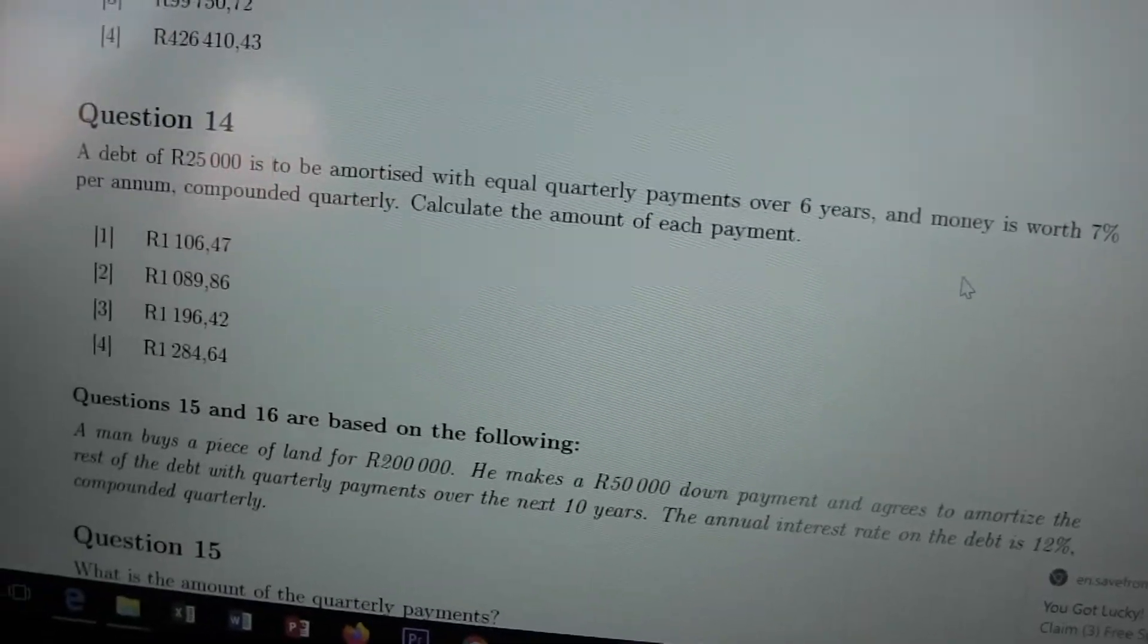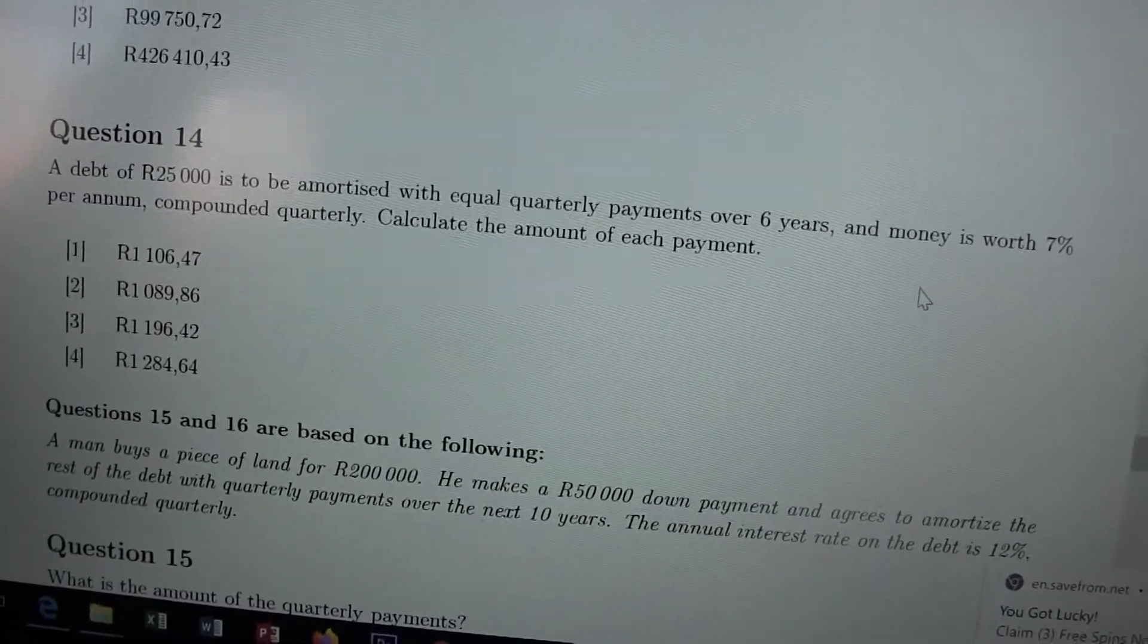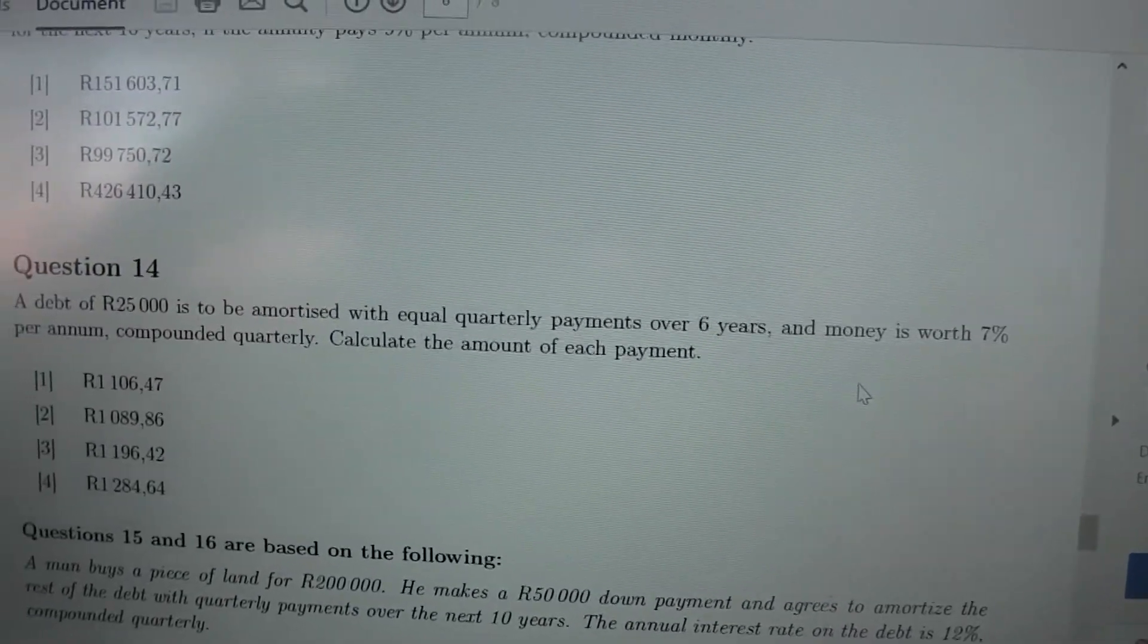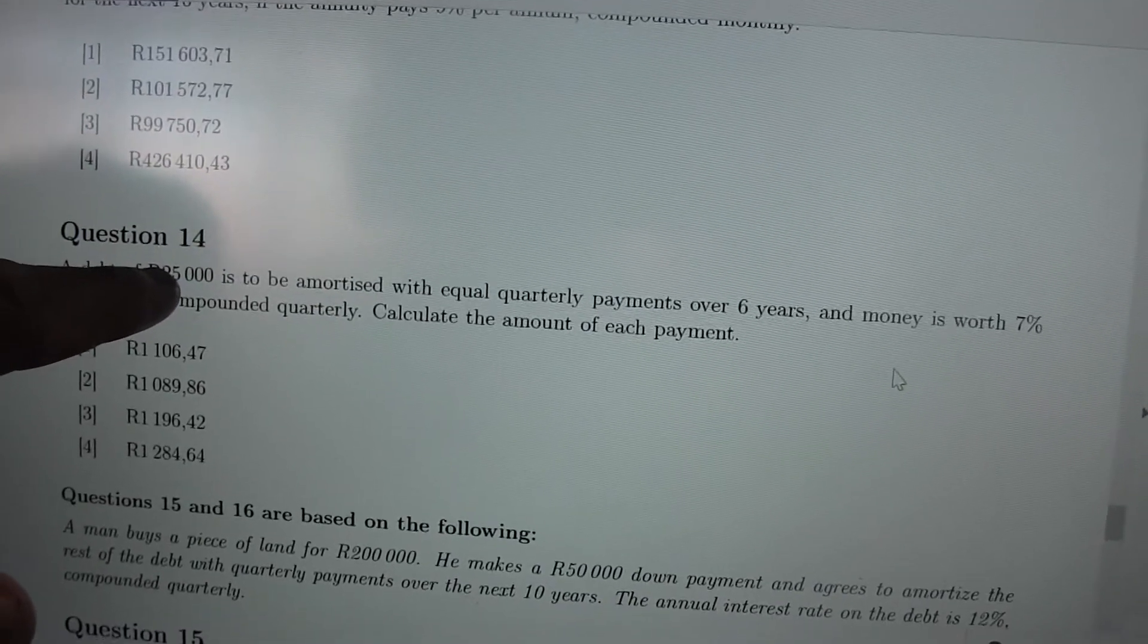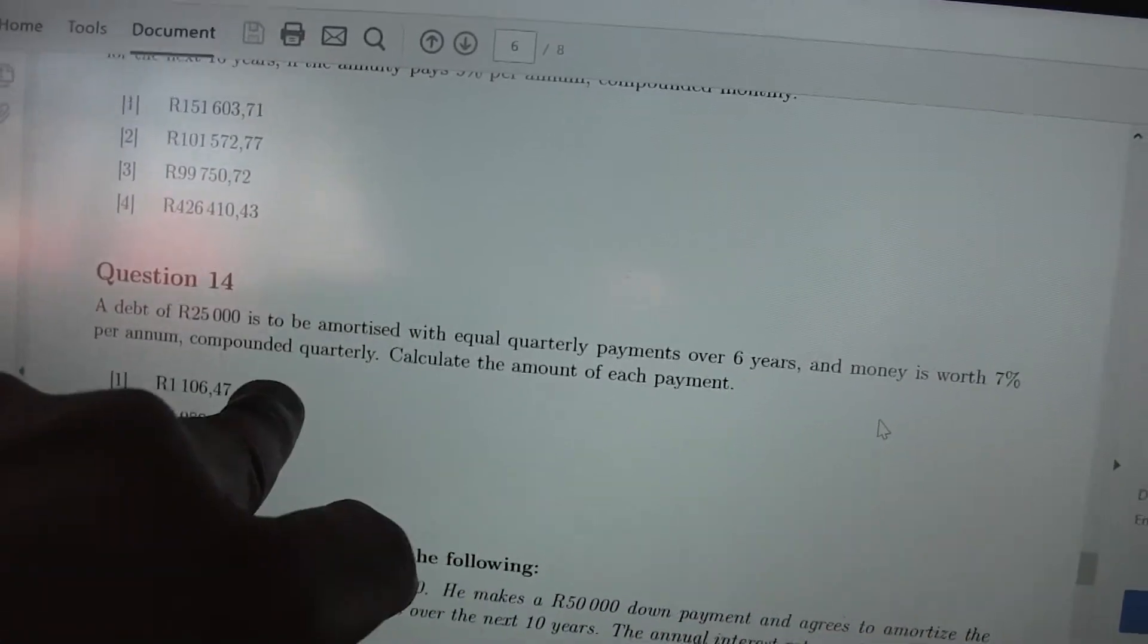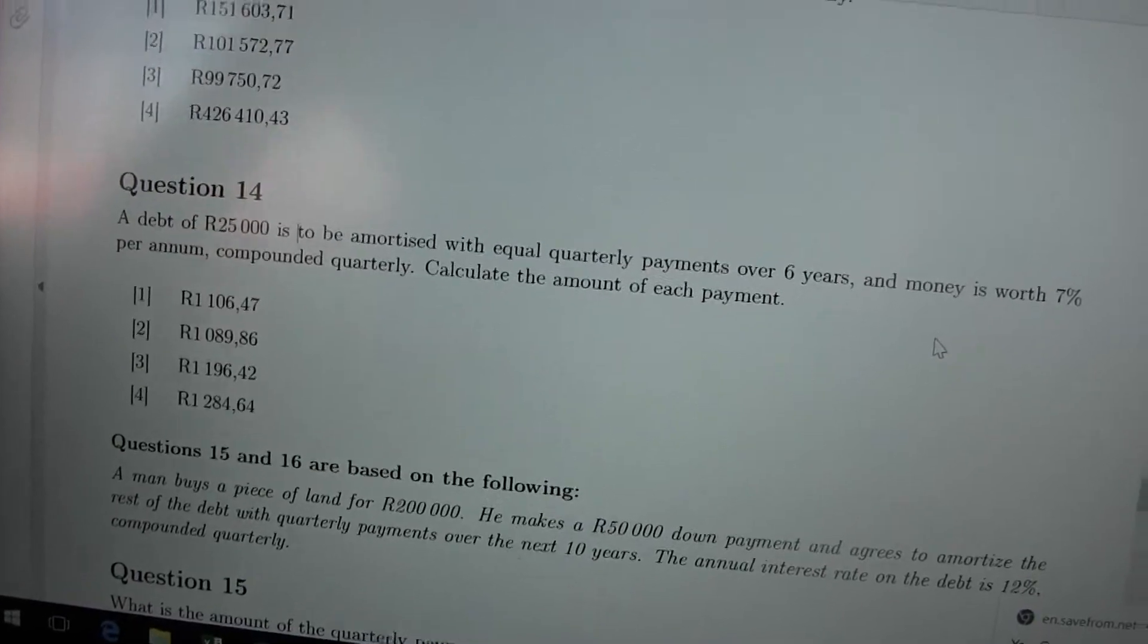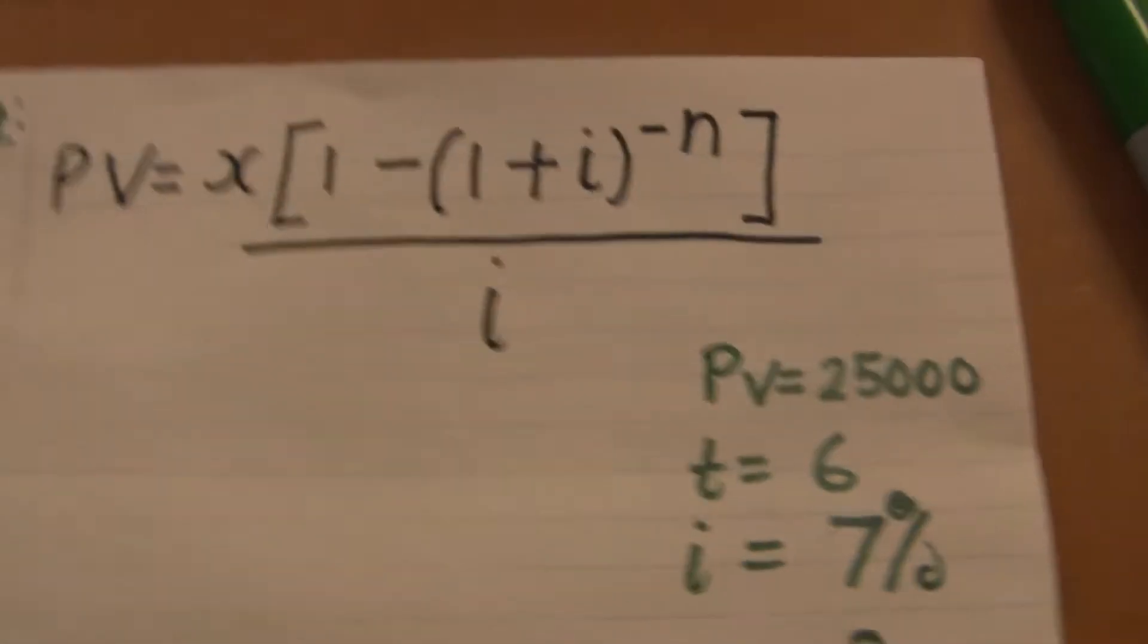Whenever they say calculate the amount of money in each payment, means you either use present value or future value. So each payment represents X. So now let's see how we do. I've written all the data down. These are present value, means the money which has to be amortized. We're going to use present value.